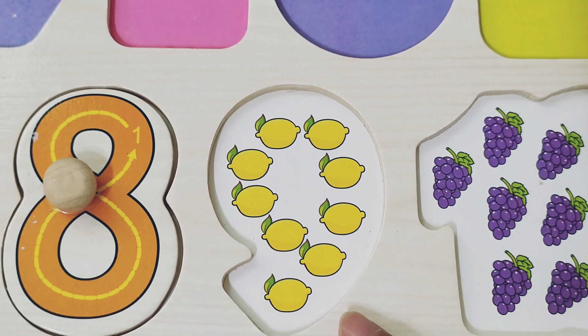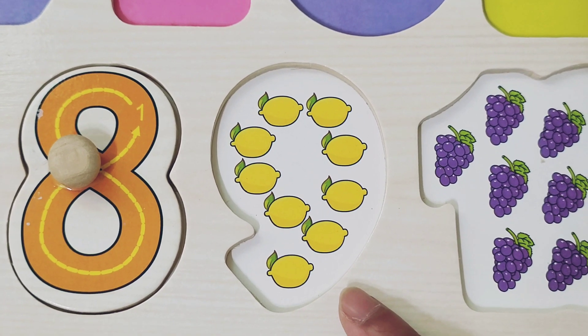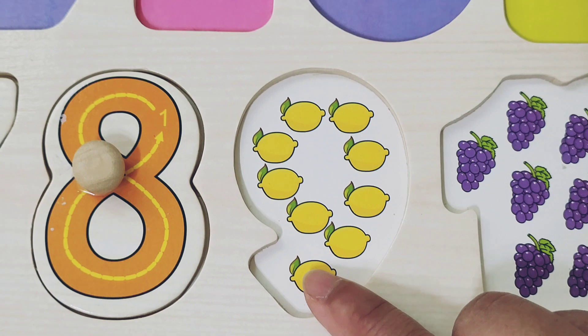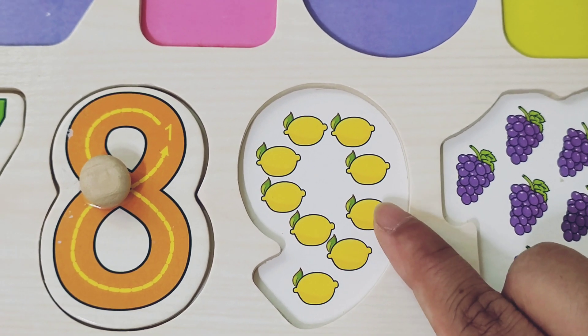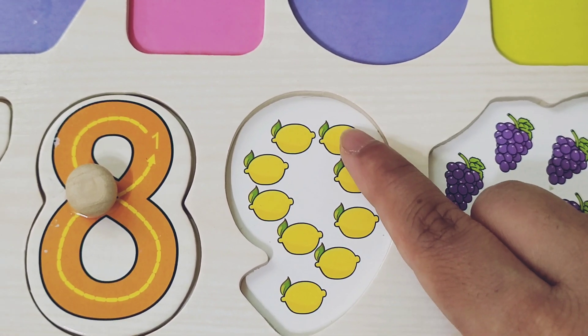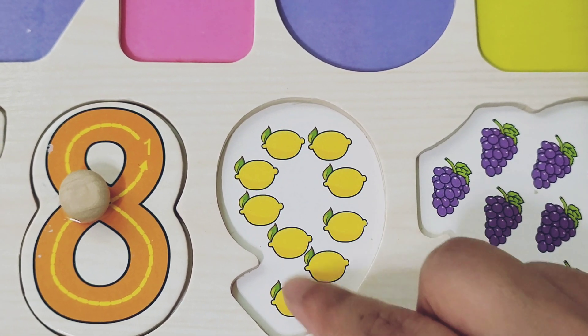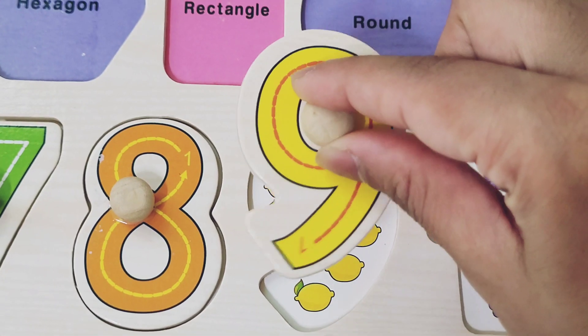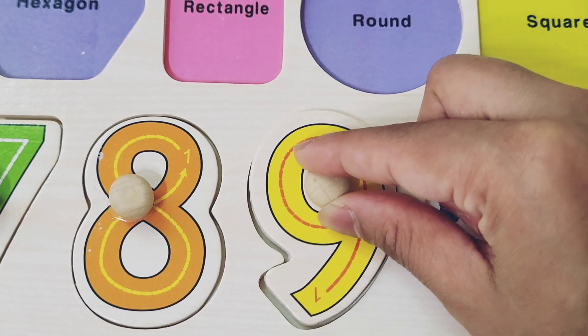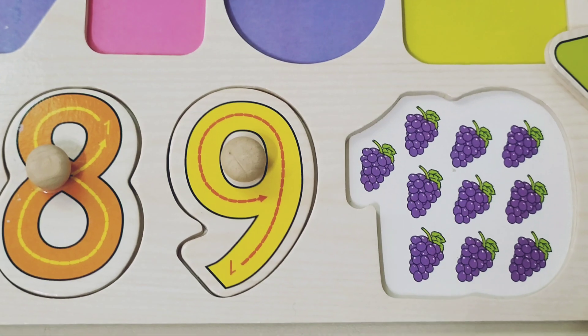And here we have yellow lemons. Let's count them. 1, 2, 3, 4, 5, 6, 7, 8, 9. And here we have number 9 to fit here. Well done, kids!